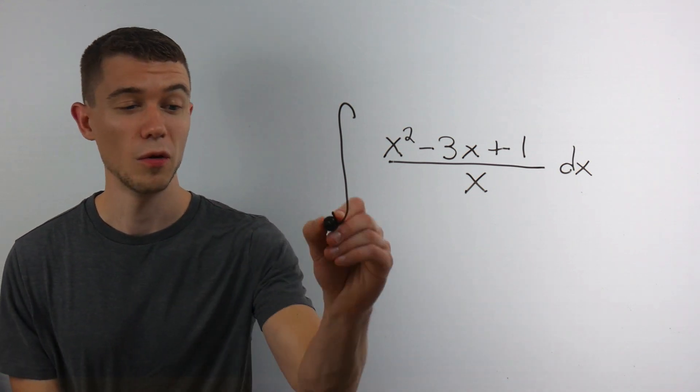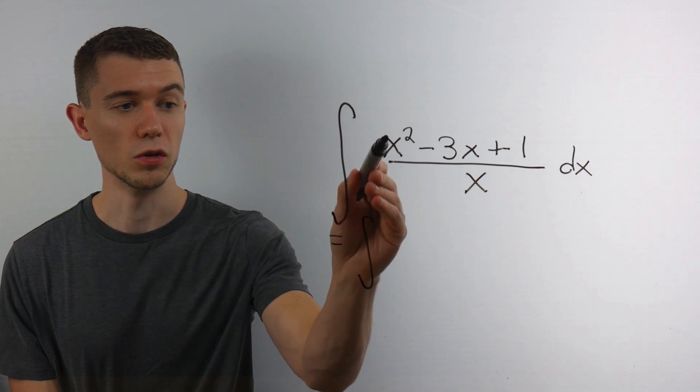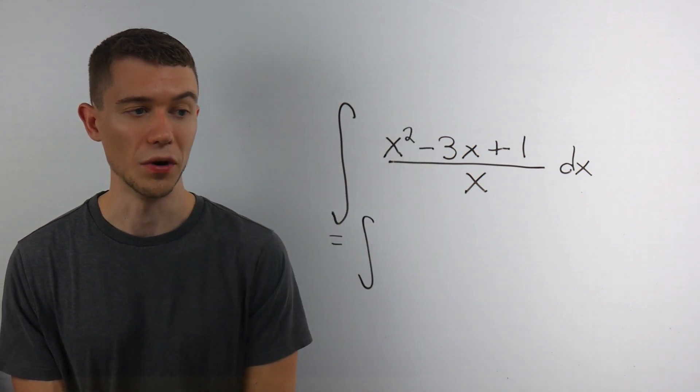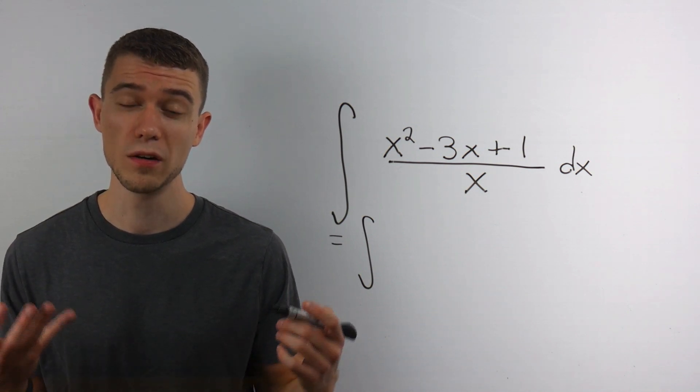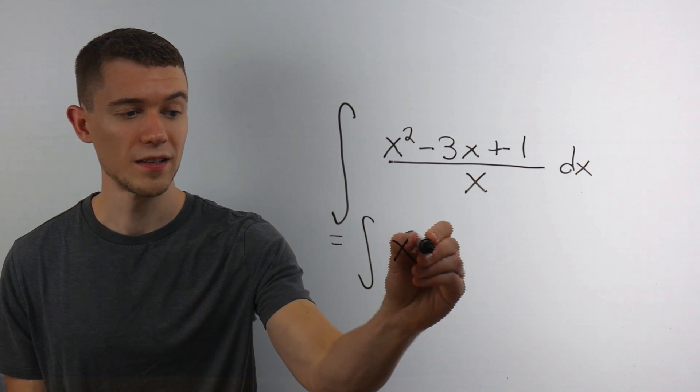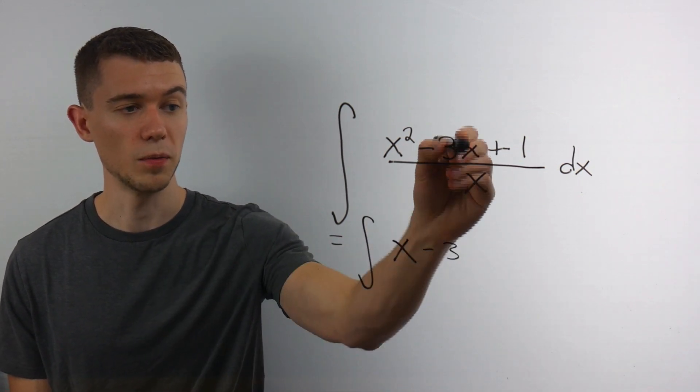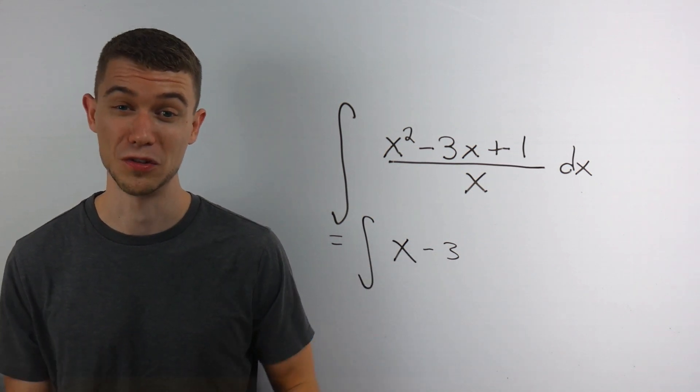the easiest thing to do would be to split this fraction up into each piece. So split this into x squared over x. What does x squared over x reduce to? Well, x squared over x reduces to just x. We have minus 3, and if I split this up, x over x, that would cancel. So it is in fact just minus 3.